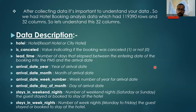Other columns include: arrival date year, arrival date month, arrival date week number, and arrival date day of month. Then stays in weekend nights — the number of weekend nights the guest stayed or booked — and stays in week nights — the number of weeknights the guest booked to stay at the hotel.